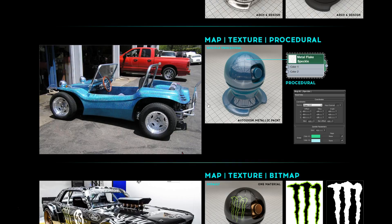One type of map is a procedural — a mathematical algorithm. For example, a speckle procedural creates a metal-flake effect on a surface. You can dial in the size and color of the speckles, and it tiles seamlessly across the whole surface with no visible seams. The Autodesk Metallic Paint shader actually has the speckle built in, but normally you'd pull out a procedural texture separately. All software — Max, Maya — has a variety of procedural noise types you can plug in.